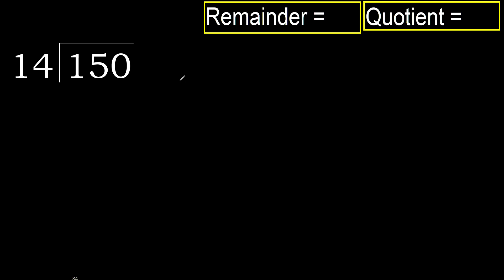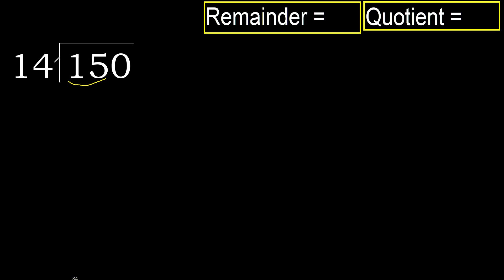150 divided by 14. 1 is less, therefore next. 15 is not less, therefore work with 15. 14 multiplied by which number is nearest, but not greater?